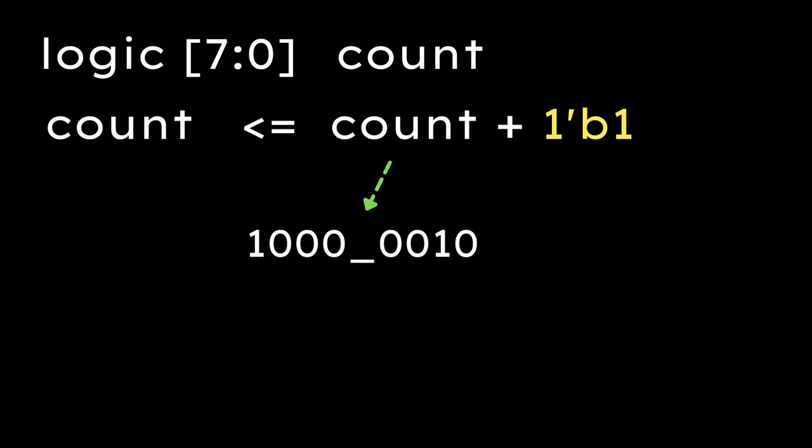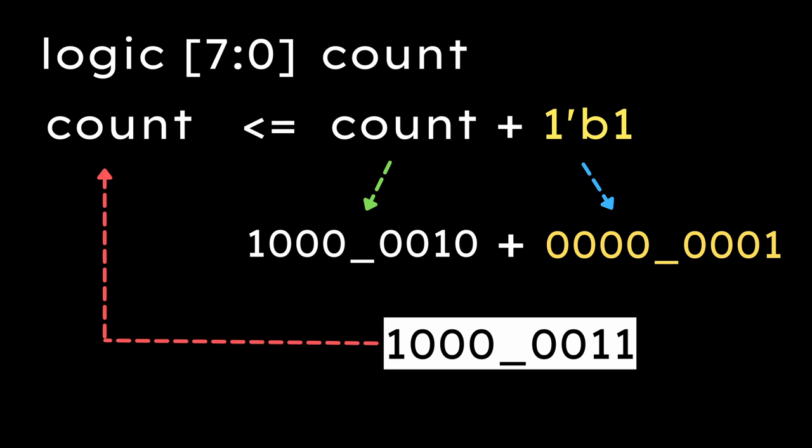In this example, count is of 8 bits and 1'b1 is 1 bit wide. So, the simulator will expand the 1'b1 to 8'b1 adding zeros and then perform the addition.